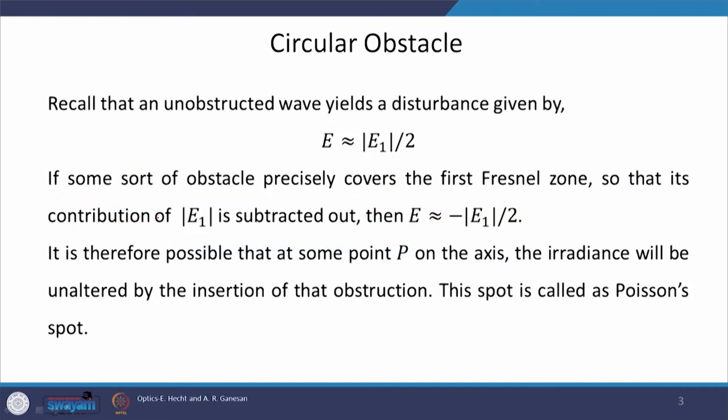Moving ahead with what we started in the last class: we talked about vibration curve and thereafter circular aperture was discussed. The pattern due to the circular aperture came out to be circular because of the circular symmetry of the aperture, and we saw that there is a concentric ring formation. All this analysis was done graphically using the vibrational curve.